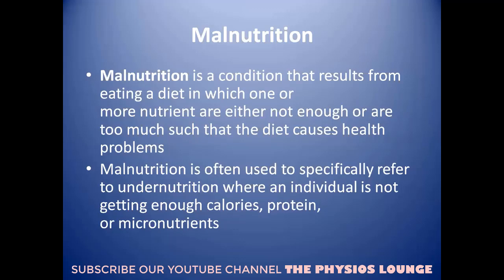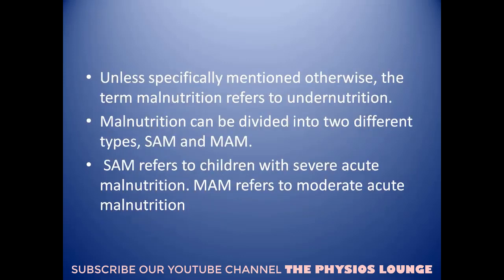Malnutrition is a condition that results from eating a diet in which one or more nutrients are either not enough or are too much, such that the diet causes health problems. Malnutrition is often used to specifically refer to undernutrition, where an individual is not getting enough calories, proteins or micronutrients. The term malnutrition generally refers to undernutrition.